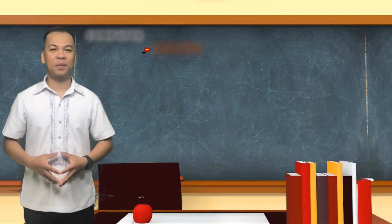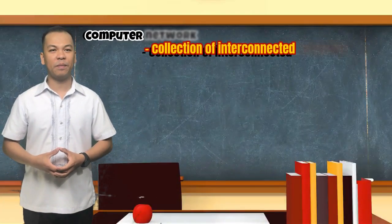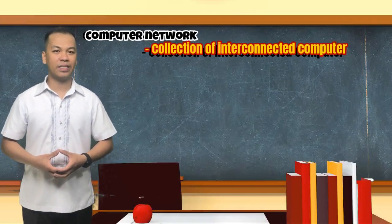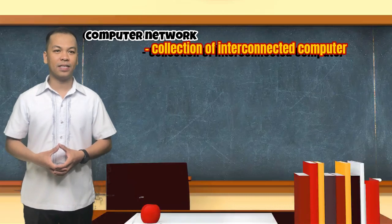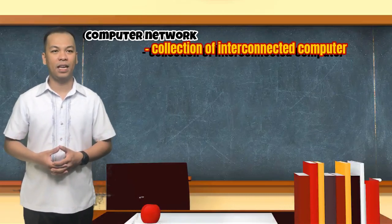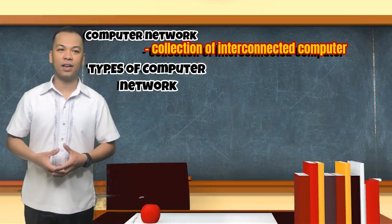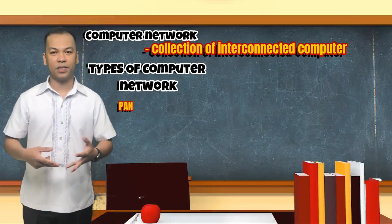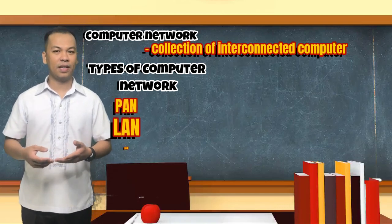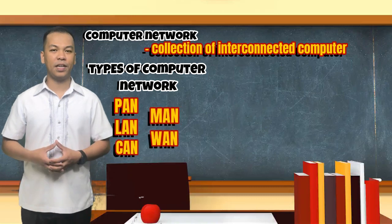Let's recap. Computer networks is simply a collection of computer equipment connected with wires, optical fibers, or wireless links, so the various separate devices can talk to one another and swap data. Computer networks are classified by range or geographical area. These are personal area network, local area network, campus area network, metropolitan area network, and wide area network.